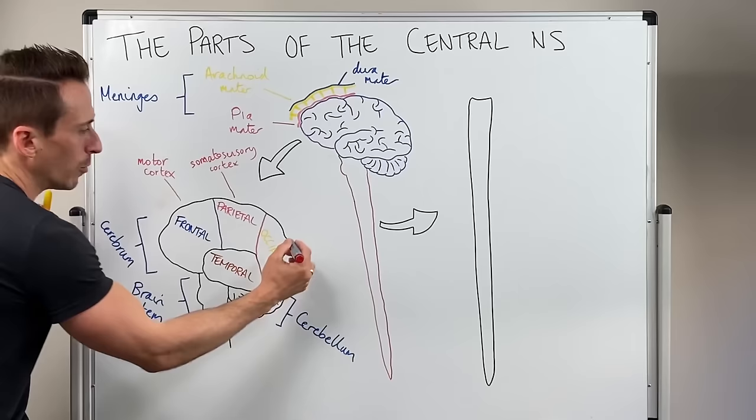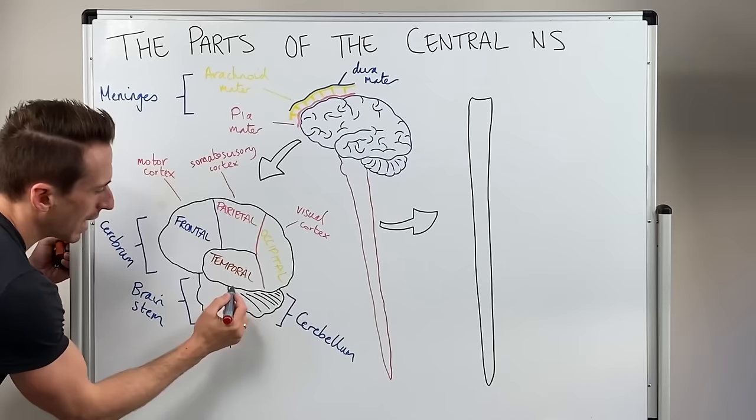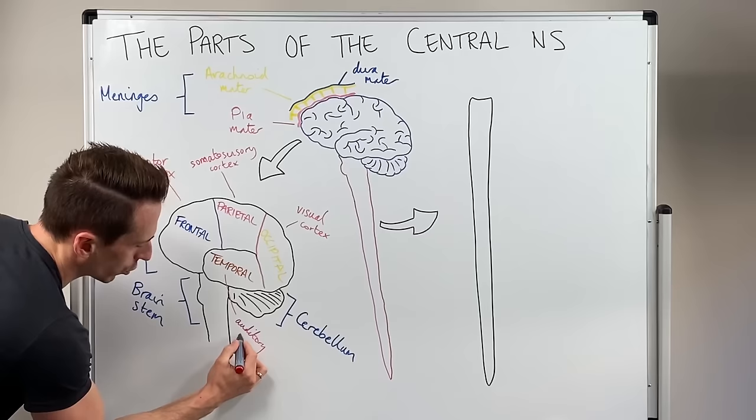The occipital lobe is where we have the visual cortex. Again, anytime you see something, in order for you to understand it and be aware of it, it must go to the occipital lobe. And the temporal lobe is the site of the auditory cortex.